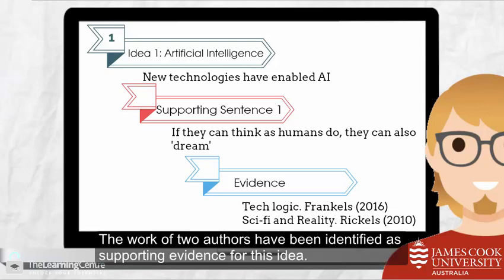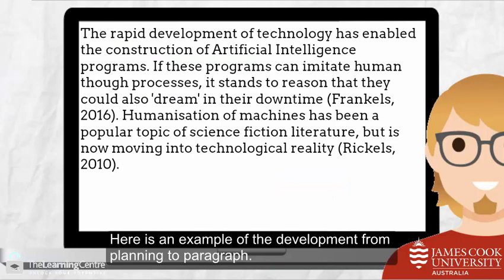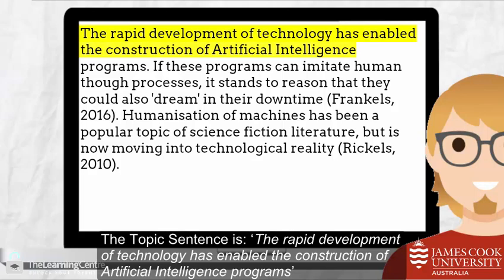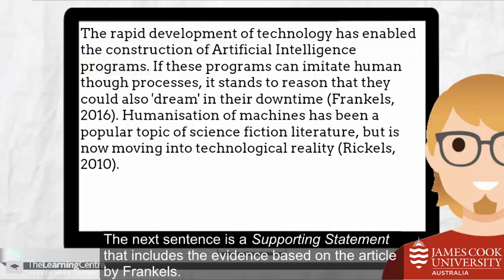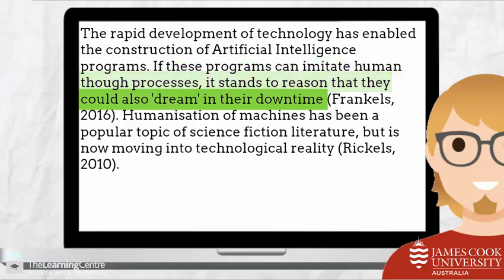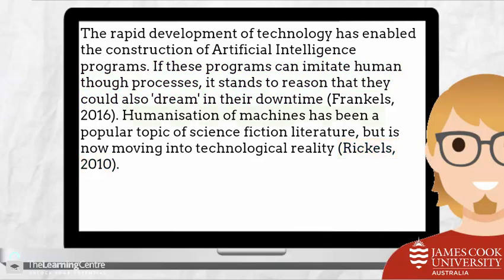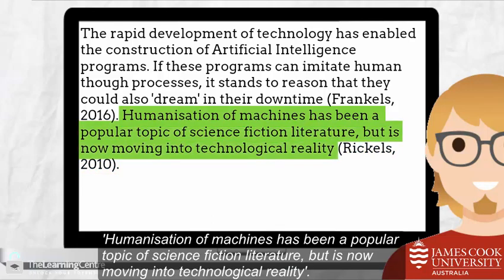The work of two authors have been identified as supporting evidence for this idea. Here is an example of the development from planning to paragraph. The topic sentence is: the rapid development of technology has enabled the construction of artificial intelligence programs. The next sentence is a supporting statement that includes the evidence based on the article by Frankels: if these programs can imitate human thought processes, it stands to reason that they could also dream in their downtime. The next sentence provides further evidence based on Rickles.